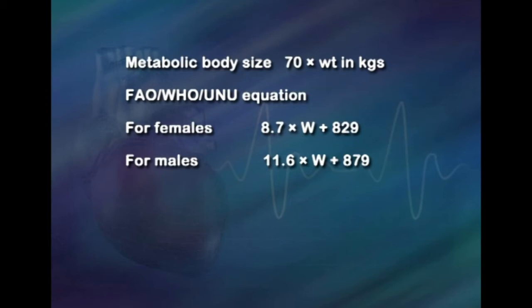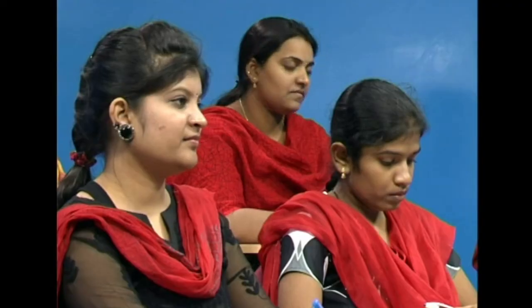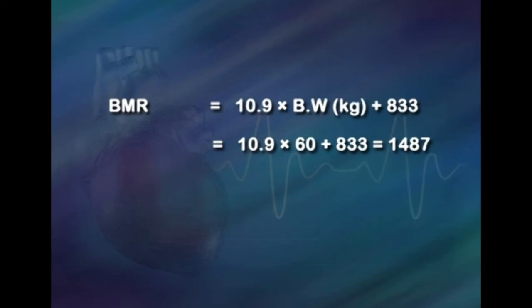The FAO-WHO-UNU equation for females is: BMR = 8.7 × weight + 829, and for males: BMR = 11.6 × weight + 879. BMR for Indians can be predicted using specific tables; for example, to calculate BMR for an individual male Indian aged 45 years, the formula is BMR = 10.9 × body weight in kg + 833, which comes to approximately 1487 kilocalories.